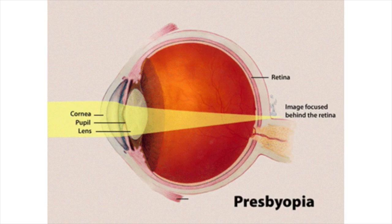A vision condition that affects the elderly is presbyopia. Presbyopia is the loss of accommodation as one ages. The human eye uses ciliary muscles to focus on objects, which change the shape of the eye's lens to adjust the focal length. In presbyopia, eye muscles weaken, reducing their performance, and this results in farsightedness. Farsightedness can be fixed by using converging lenses.